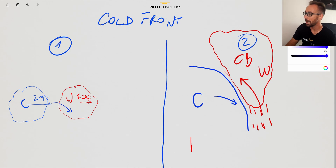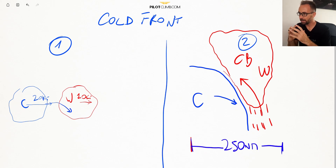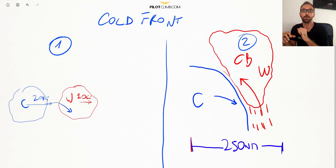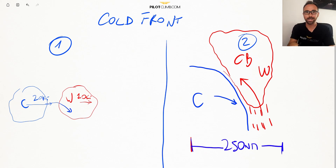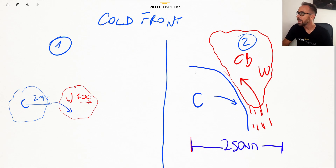In a cold front you can have CBs and very heavy precipitation like thunderstorms. Another difference is the size: the cold front can be as large as 250 nautical miles — about half of the warm front. This is because the warm front has a shallower slope since the warm air climbs gently, while in the cold front the cold air moves faster, pushes the warm air up rapidly, producing CBs because the air climbs very fast over a short distance.